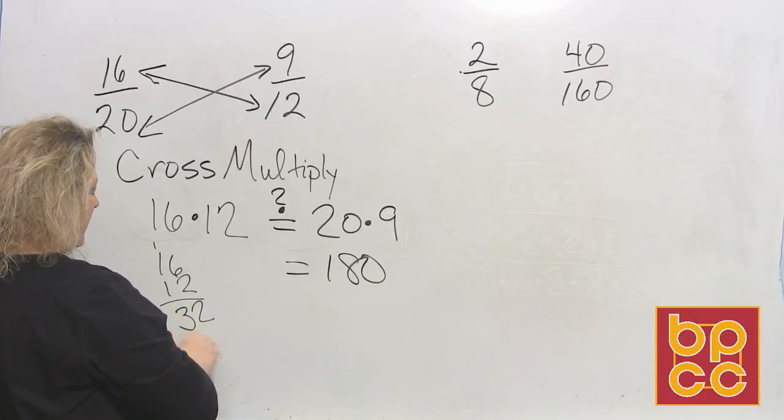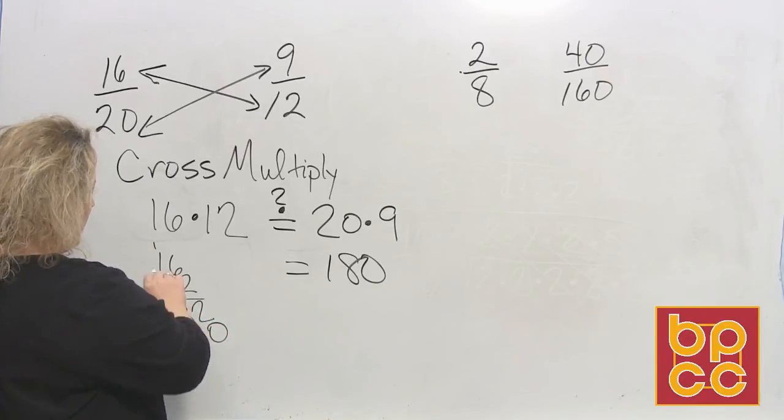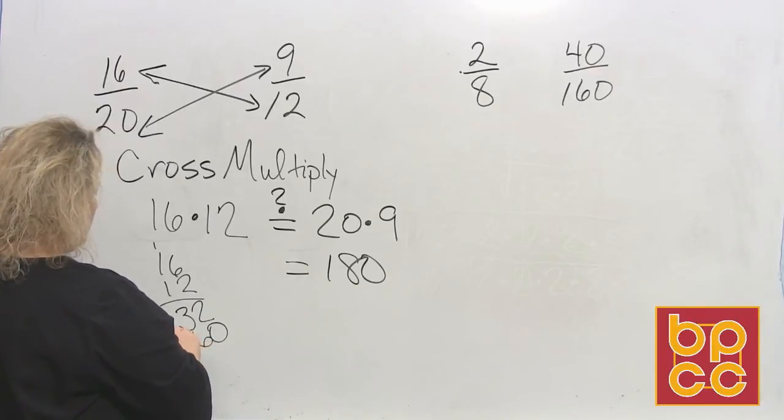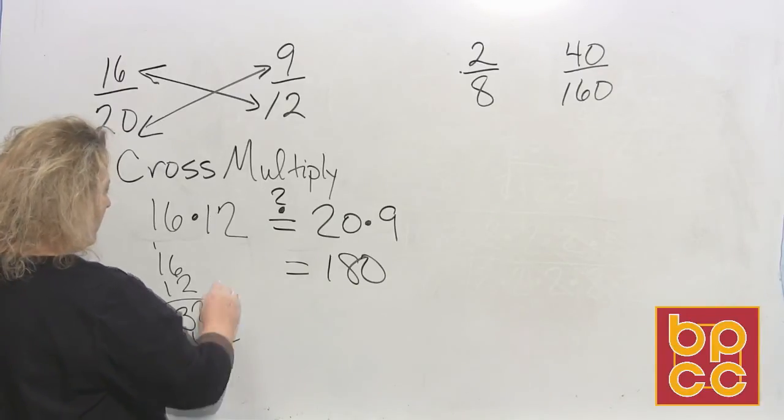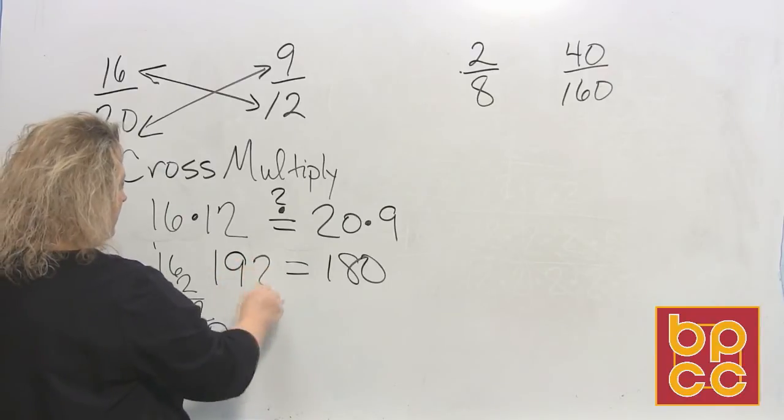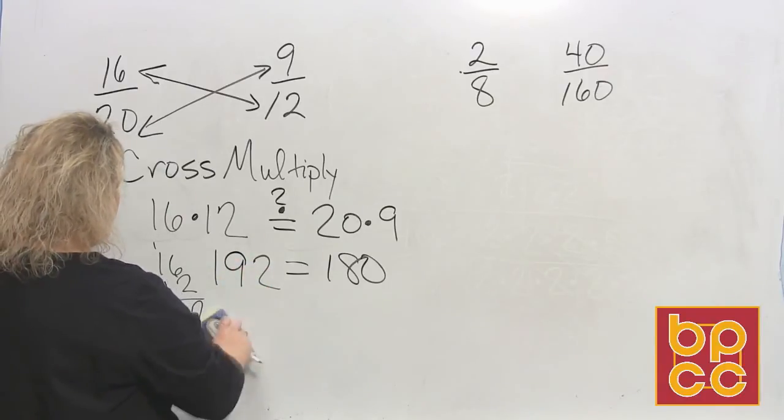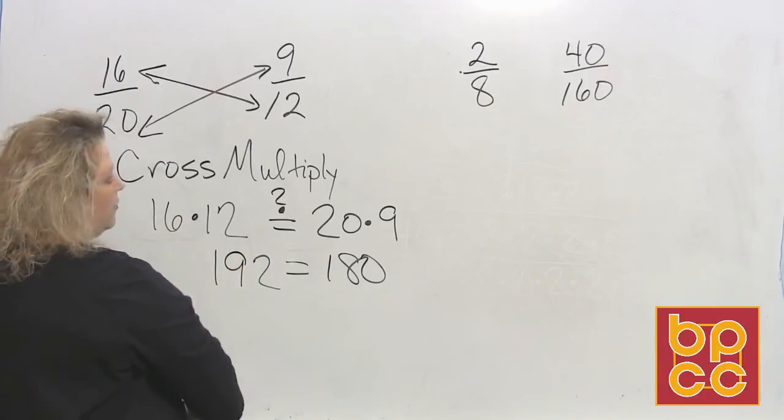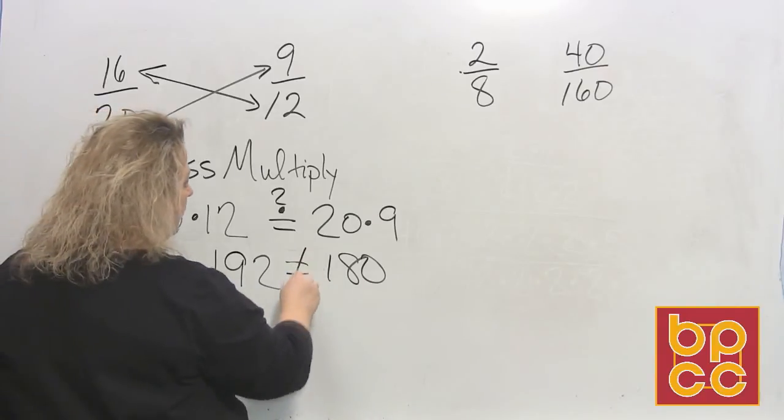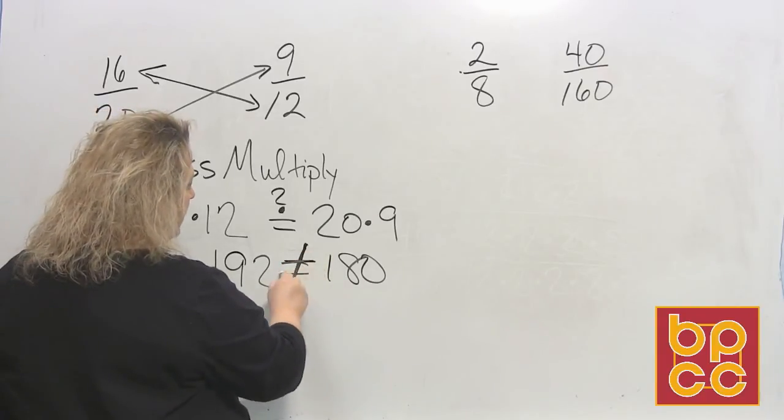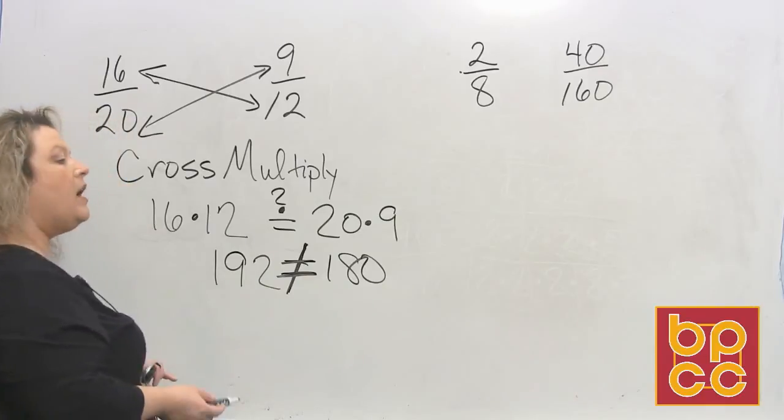Stick a placeholder. And then that would be 1 times 6 is 6, 1 times 1 is 1. That would be 192. Well, 192 is not equal to 180. Therefore, we put a slash through the equal sign to represent that they are not equal.